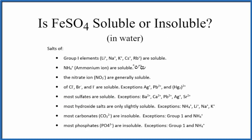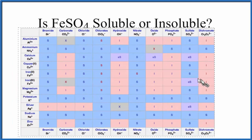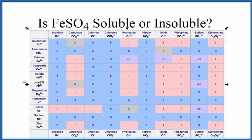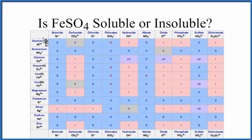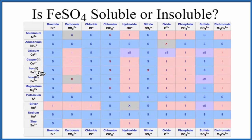We could also take a look at the solubility chart. Here's a solubility chart. As we look down, these are the positive ions here. And we see iron 2, Fe2+.